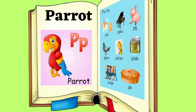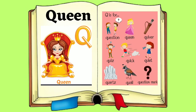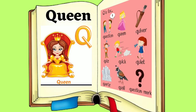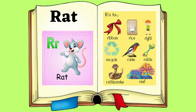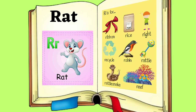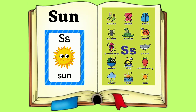Orange. P for Parrot. P, P. Parrot. Q for Queen. Q, Q. Queen. R for Rat. R, R.